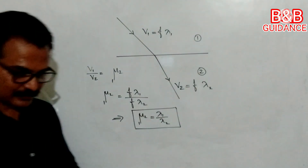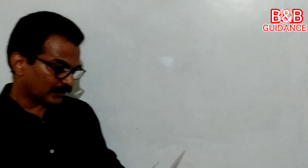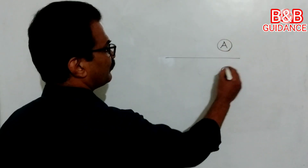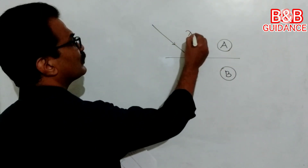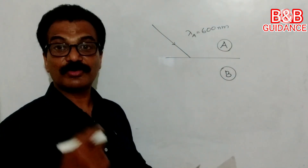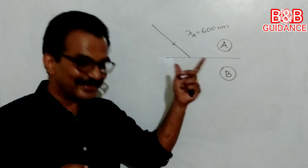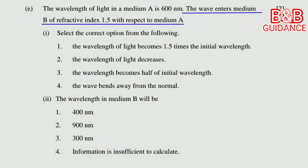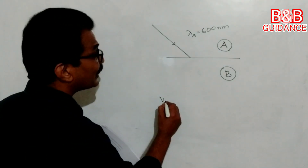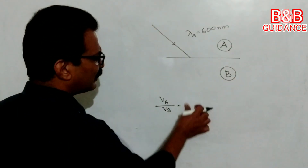Let us go to the question. The wavelength of light in medium A is 600 nanometers. The wave enters medium B with a refractive index of 1.5 with respect to medium A. So refractive index of B with respect to A is 1.5, meaning VA by VB equals 3 by 2.